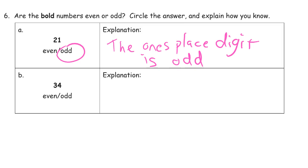And then here we have 34. And I can see that that 4 tells me that it's even. So I can just write this. 1s place digit is even.